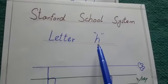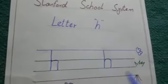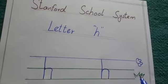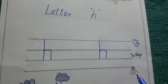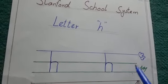Which letter? Letter h. But first I will explain these lines. The first line is called skyline. These mid two lines are called grass line, and the last one is called root line. Skyline, grass line, root line.